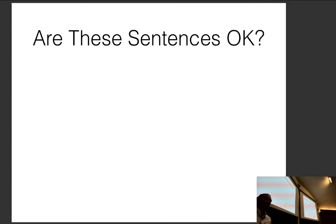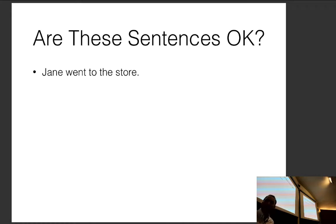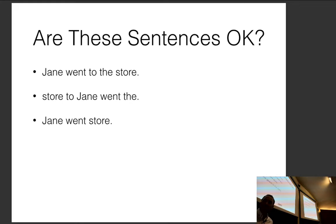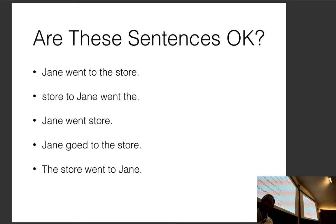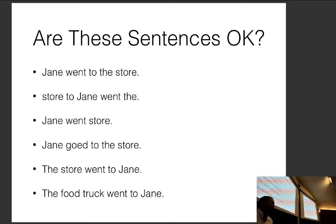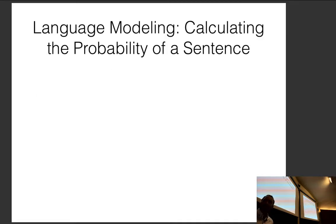I talked about acceptability judgments last time, where we decided whether sentences like 'Jane went to the store,' 'store to Jane went the,' 'Jane go to the store,' etc., were grammatical or not. Some were clearly ungrammatical, some were ungrammatical only in certain languages, and some were semantically questionable. Language modeling is calculating the probability of a sentence — modeling the distribution of sentences in terms of how likely they are to appear in a language.